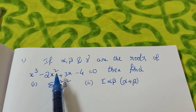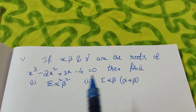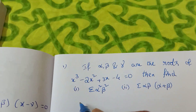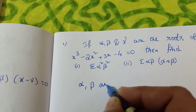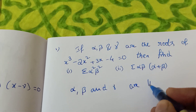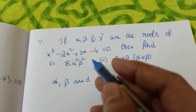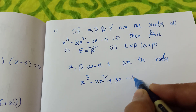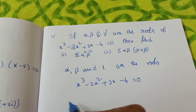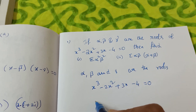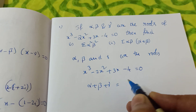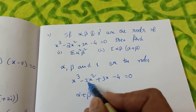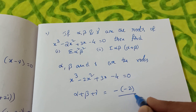You know what — sum of the roots you should find, product of two roots, next product of roots. What is S1, S2, S3 we want? Now write — since Alpha, Beta and Gamma are the roots of the equation x³ minus 2x² plus 3x minus 4 equal to 0. Sum of the roots S1 is Alpha plus Beta plus Gamma. What is the formula? Minus p1 by p0, that gives minus of minus 2 by 1, which is 2.